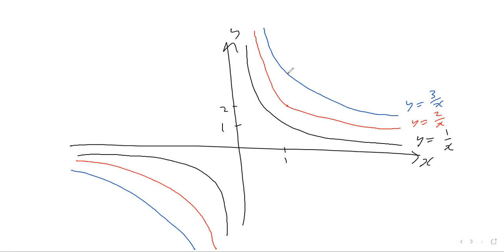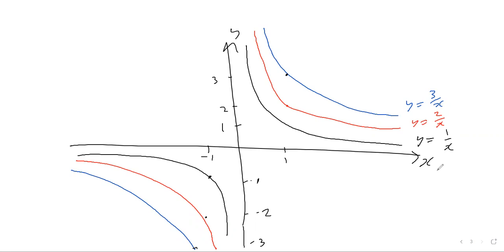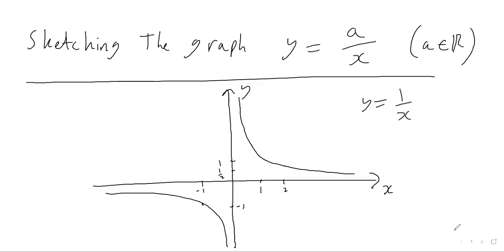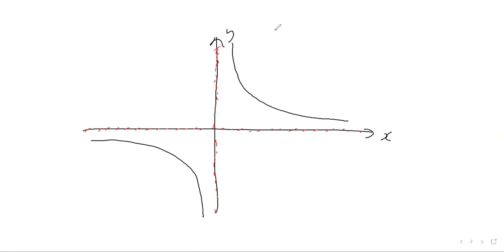For the blue graph, y equals 3 over x, you're trebling the original 1 over x graph, so that point would be 3. On the negative side, the corresponding values would be minus 1, minus 2, and minus 3. So increasing the numerator just increases the y-values — it doubles, trebles, quadruples the y-coordinates, and so on.